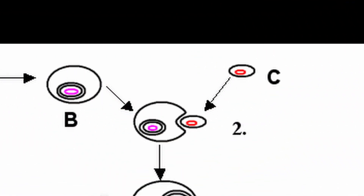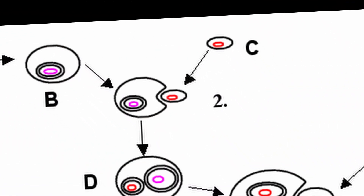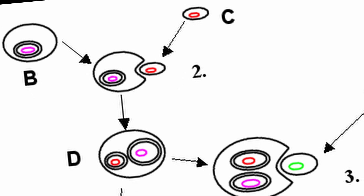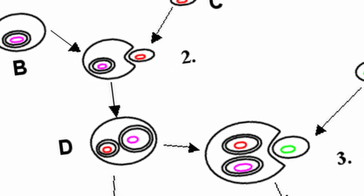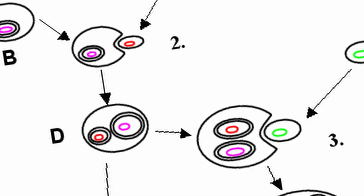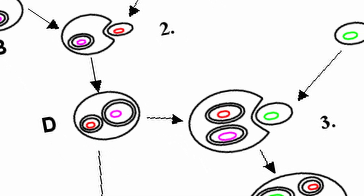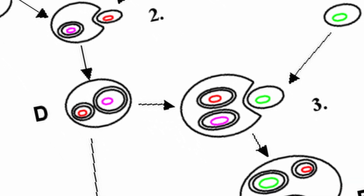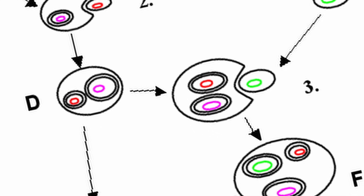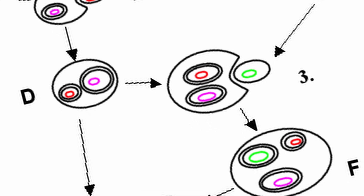Sometime after the first eukaryote, some eukaryote had another symbiotic relationship which then turned endosymbiotic, and this time it was with another bacteria — a photosynthesizing one — and thus came to be the ancestor of all plants. Let's now get a better sense of what the theory of endosymbiosis means.